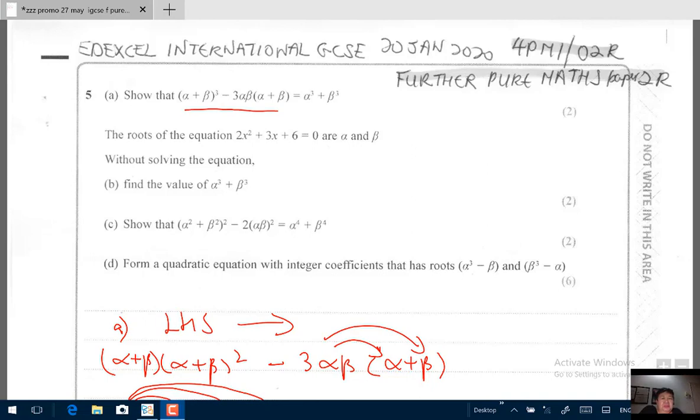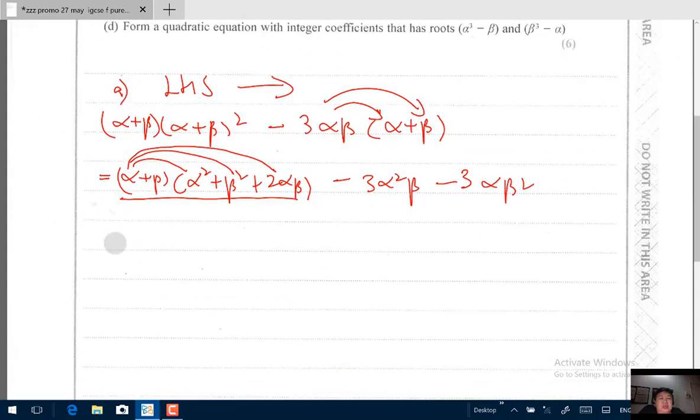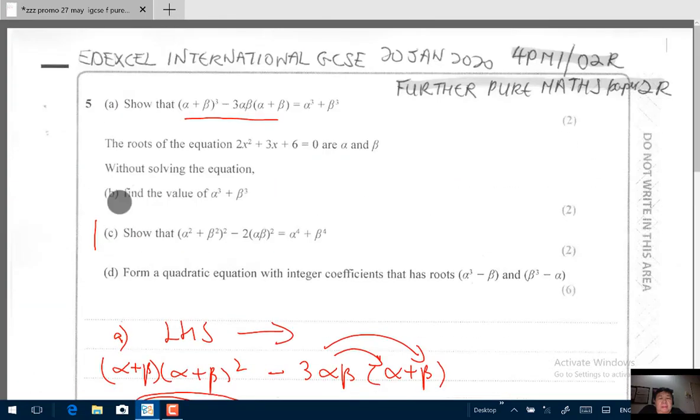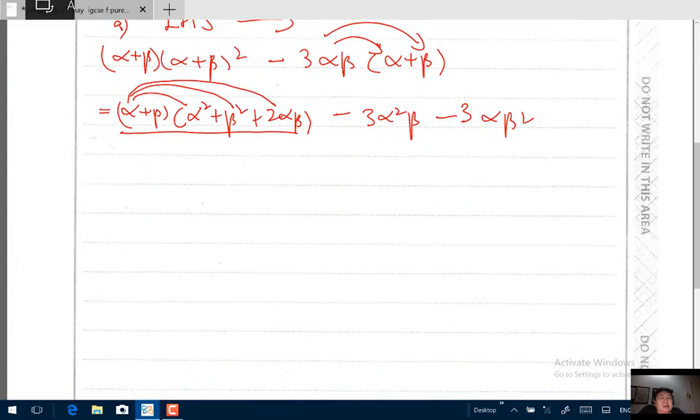Now they ask you to show that (α² + β²)² - 2(αβ)² is the same as α⁴ + β⁴. This one looks a little bit scary but it is not. You do have to know one thing for part C.